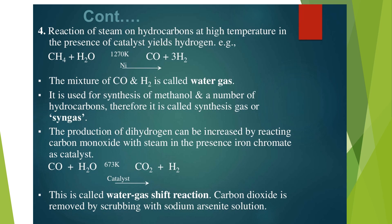The production of hydrogen can be increased by reacting carbon monoxide with steam in presence of iron chromate as catalyst. CO plus H2O at 673 Kelvin with catalyst converts into CO2 and H2. This is called water-gas shift reaction. Carbon dioxide is removed by scrubbing with sodium arsenite solution.